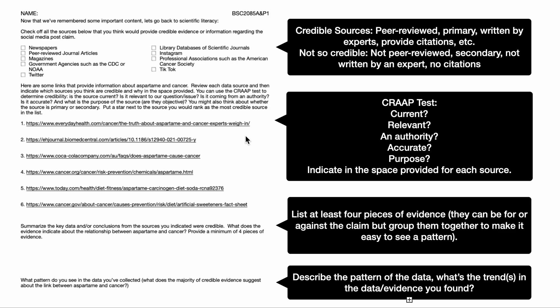Next, you are going to evaluate some sources of information that have been provided to you for the project. There are six links and you are going to indicate which ones you think are credible and why. You'll click on each one, give it a quick read, and then use what we call the CRAP test to figure out if it's a good source. Is the source current? We mostly like to have current sources so we know they're up to date.